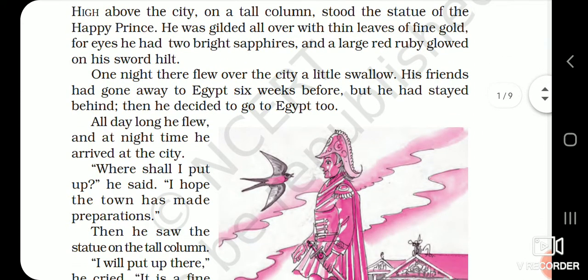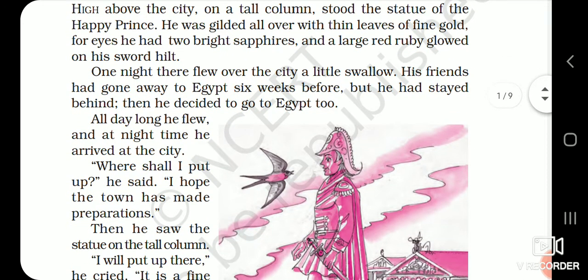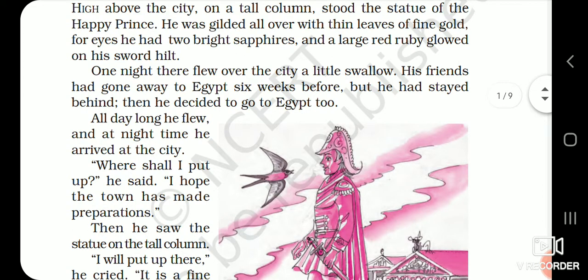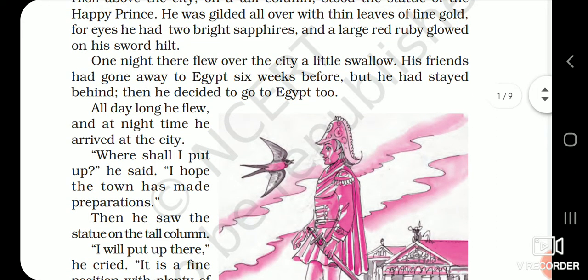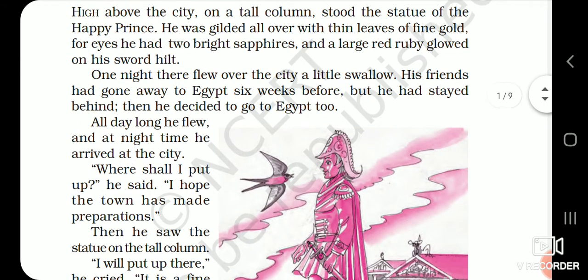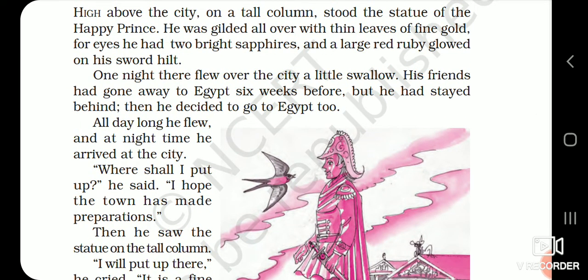One night, there flew over the city a little swallow. His friends had gone away to Egypt six weeks before, but he had stayed behind and then decided to go to Egypt too. Swallow is the next character, students. The story is based on these two characters — the statue of the Happy Prince and the swallow. Swallow is basically a small white-colored bird; it resembles the goose.